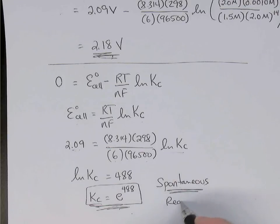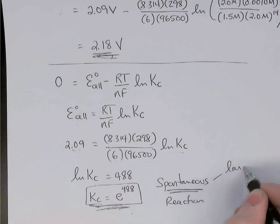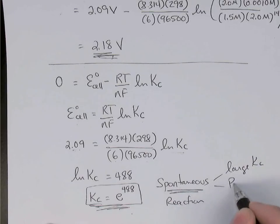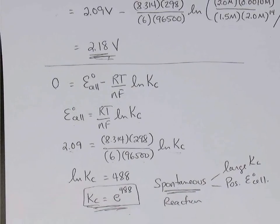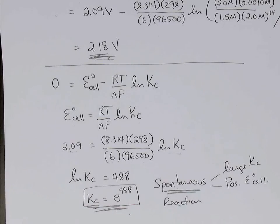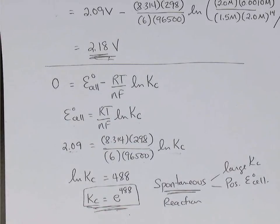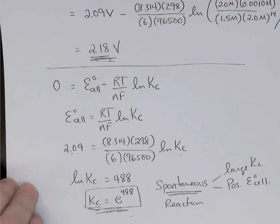So a spontaneous reaction means large Kc, and it means positive E0 cell. Those are connected. If your E0 cell is positive, you will have a large value of Kc, and your reaction is spontaneous the way it was written. Of course, if you then look at the reverse reaction, it'll have a very small Kc, and therefore it would be a non-spontaneous reaction. And in the reverse direction, we'd have to reverse both half-reactions, and we'd get a negative value for E0. So a negative E0 has a small Kc value and is a non-spontaneous process.